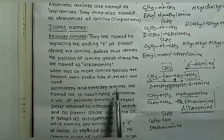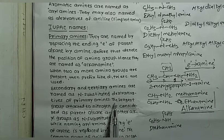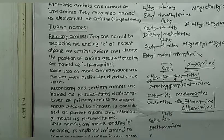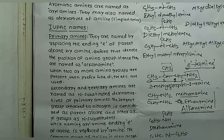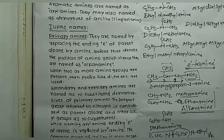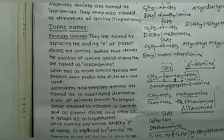For secondary and tertiary amines in IUPAC nomenclature, they are named as N-substituted derivatives of primary amines. The largest alkyl group attached to nitrogen is considered the parent alkane, and the other groups are nitrogen substituents. For example, C₂H₅NHC₂H₅ is 'N-ethylethanamine', since one ethyl group is the parent and the other is the N-substituent.